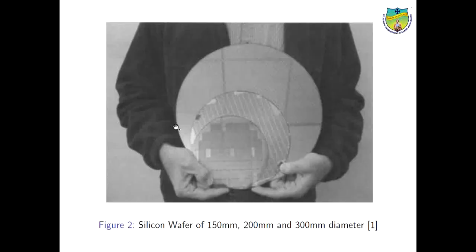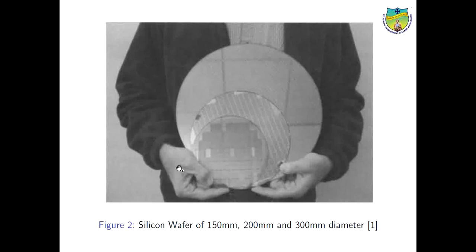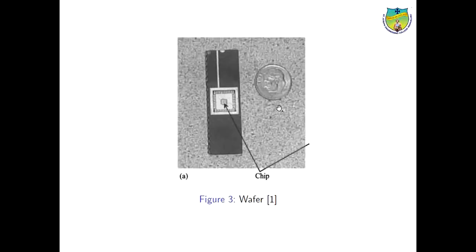Different wafer sizes are shown here. A 150 mm wafer is almost equal to a 6-inch wafer. A 200 mm wafer is almost the size of an 8-inch wafer. The latest is a 300 mm diameter pure silicon wafer, about 12 inches. The larger the wafer size, the more chips can be developed. The latest technology uses a 300 mm or 12-inch wafer.